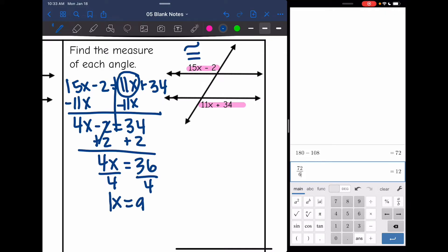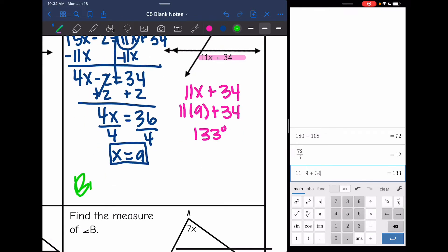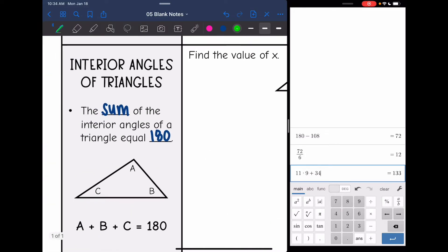So I found x but it wants me to find each angle measure. Since these angles are congruent, they're the same, I just have to plug back into one of them. So I'm going to plug into 11x plus 34. So 11 times 9 plus 34. And 11 times 9 plus 34 is 133 degrees. So we can say both angles are 133 degrees. Okay, so that was the first angle relationship we learned about.